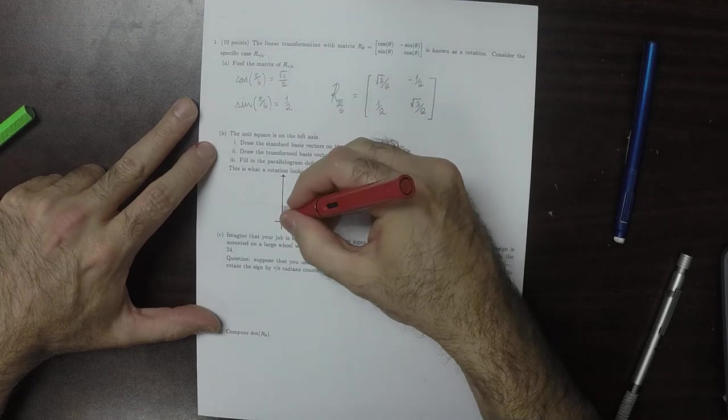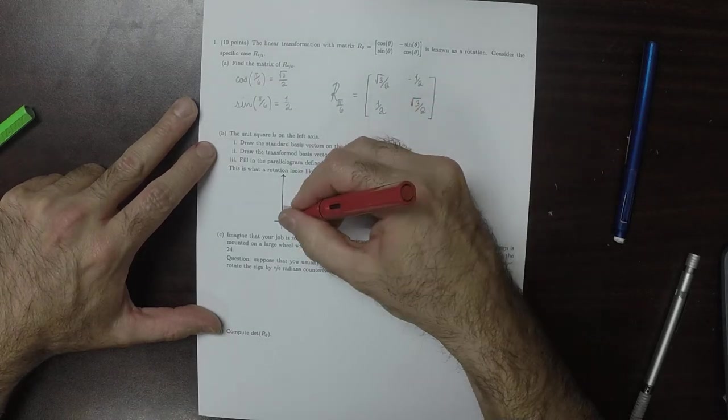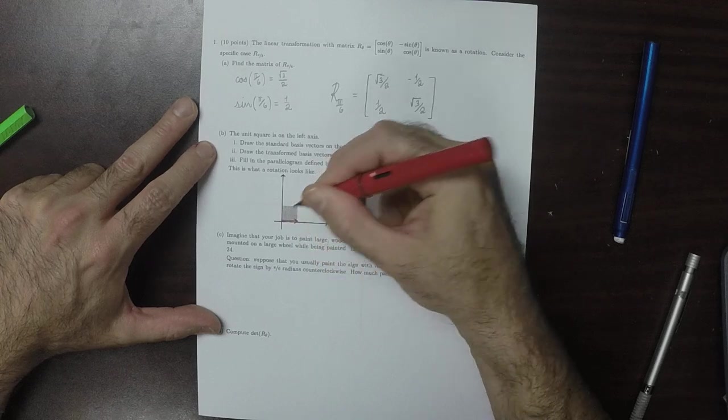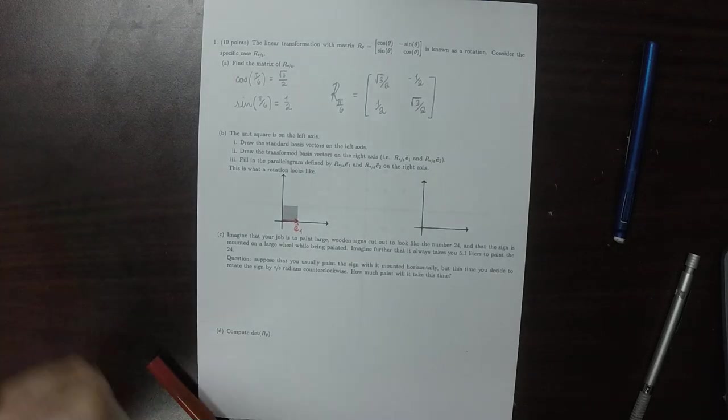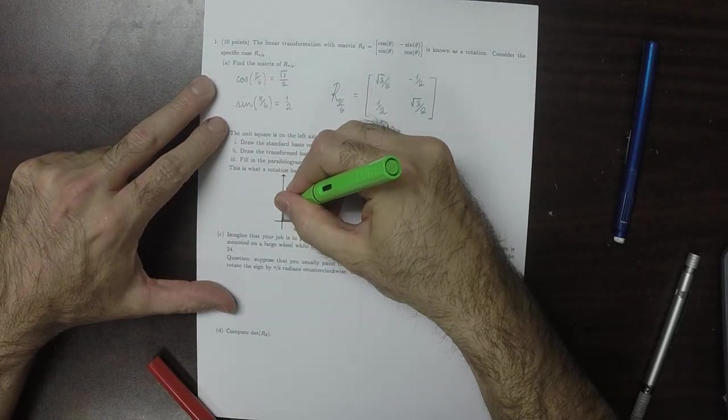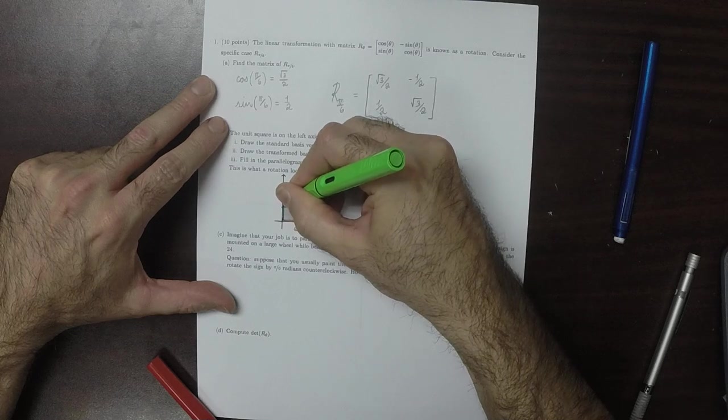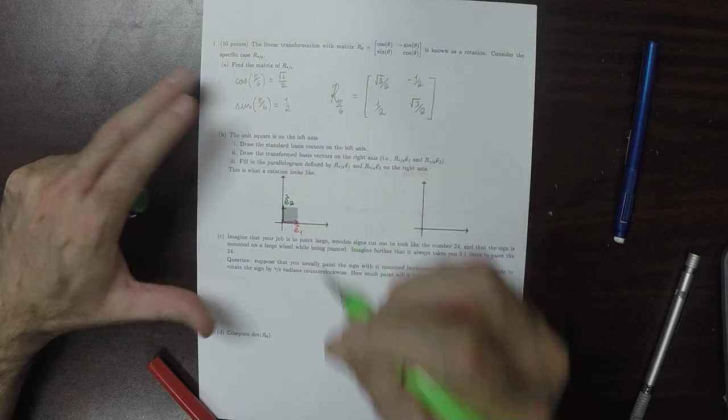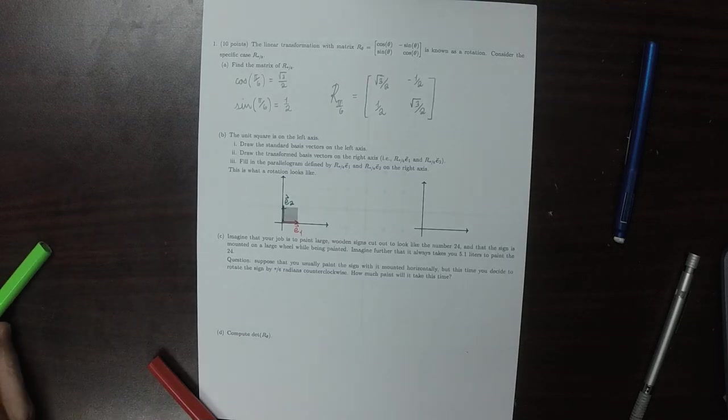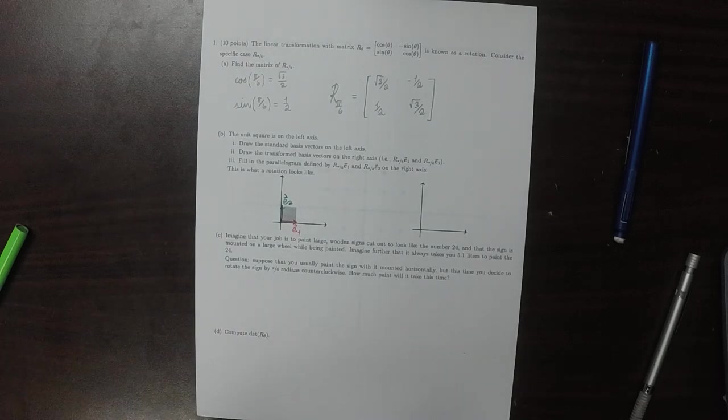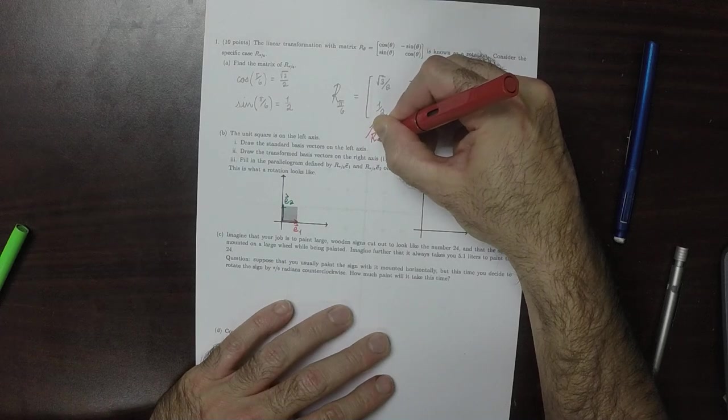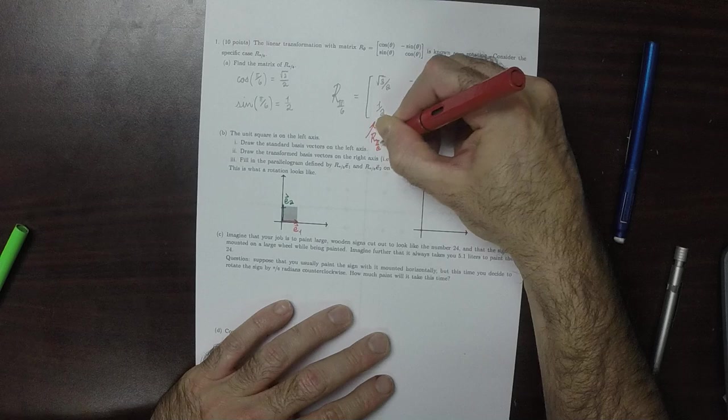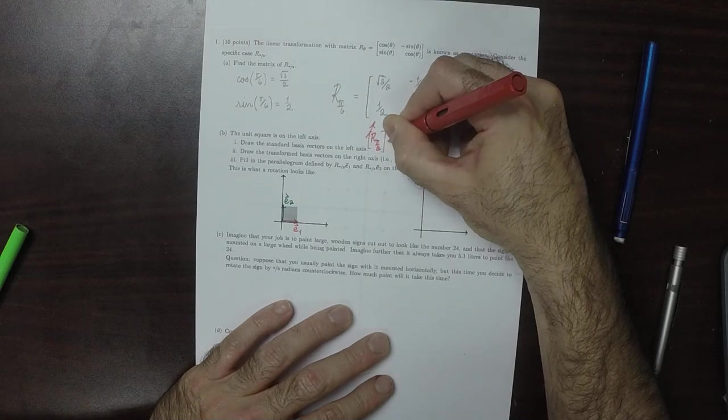Okay, part i. That's e1, that's e2. So this here, that's r 5 over 6 applied to e1.